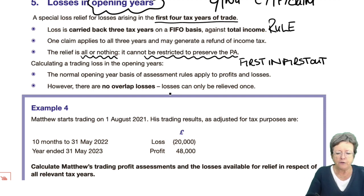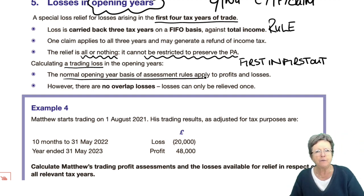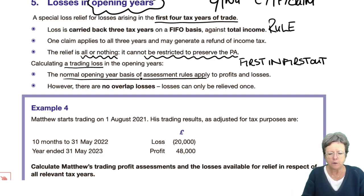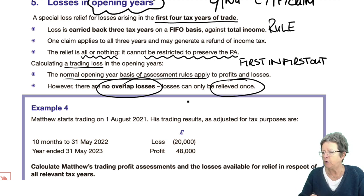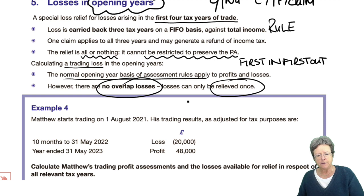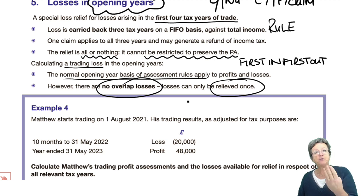When calculating a trade loss, the normal opening year's rules apply. However, there are no overlap losses, and they can only be relieved once. The process is: adjust the profits using the computation, deduct the capital allowances, and if that produces a loss, this is one of the loss reliefs that we can use.